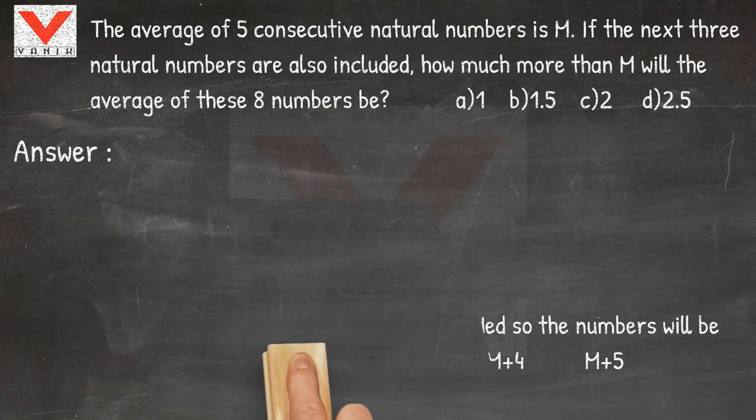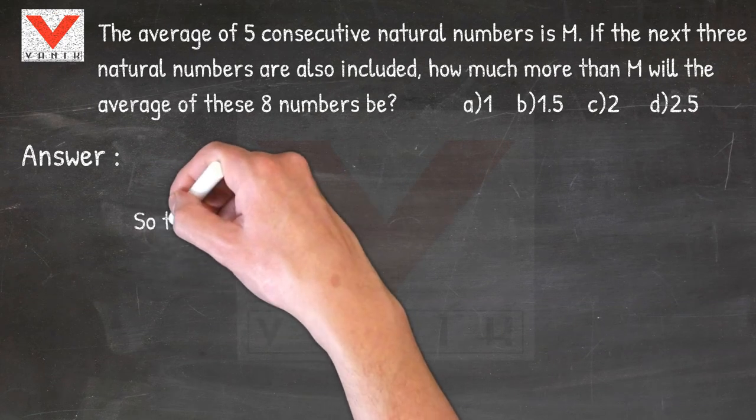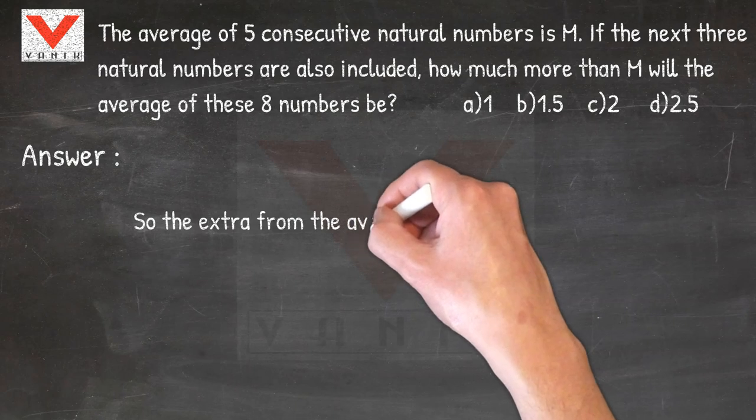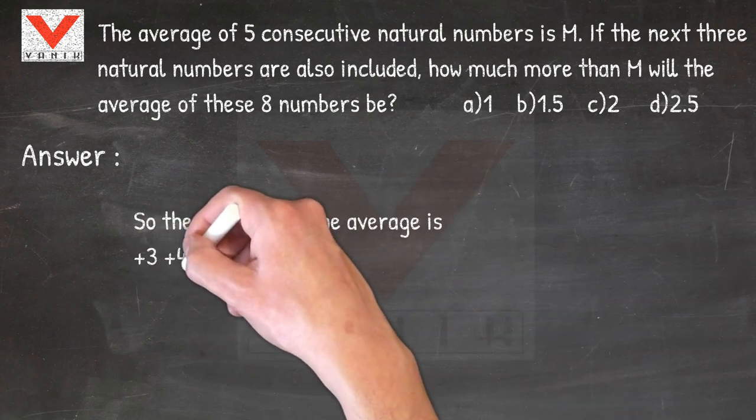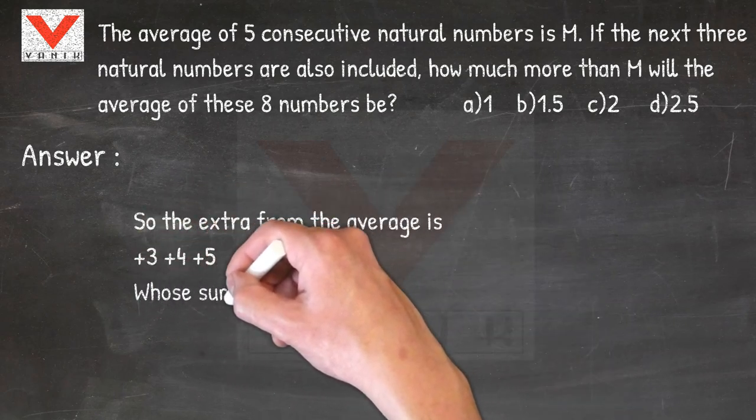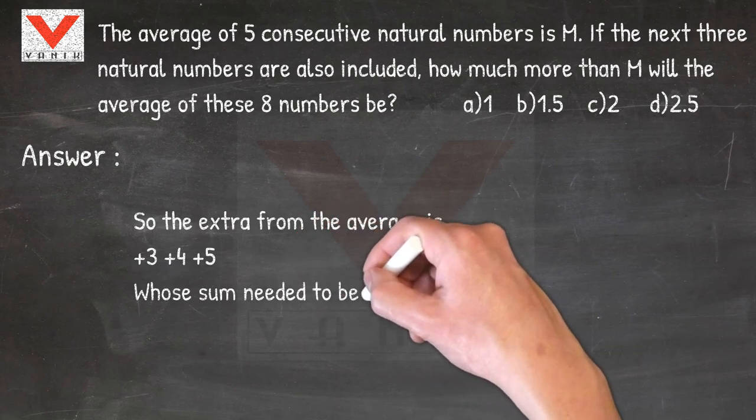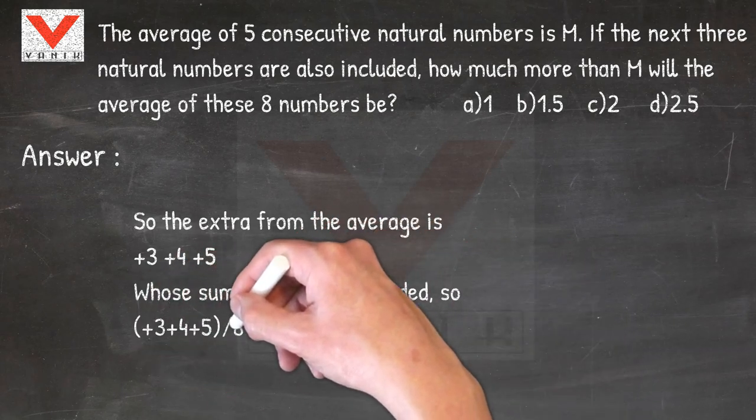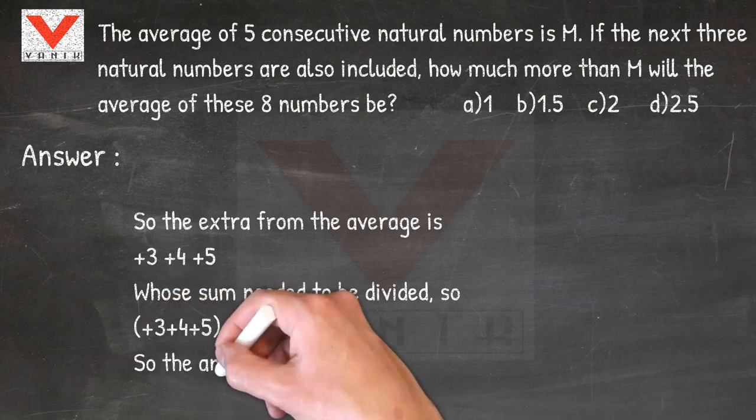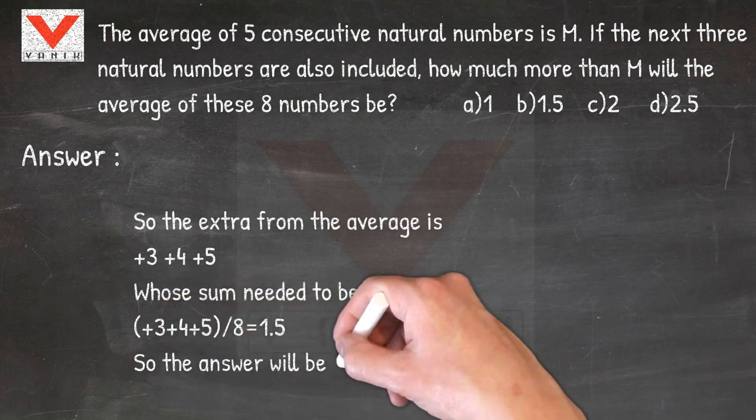So the extra from the average is plus 3 plus 4 plus 5, whose sum needed to be divided. So plus 3 plus 4 plus 5 divided by 8 equals 1.5. So the answer will be 1.5.